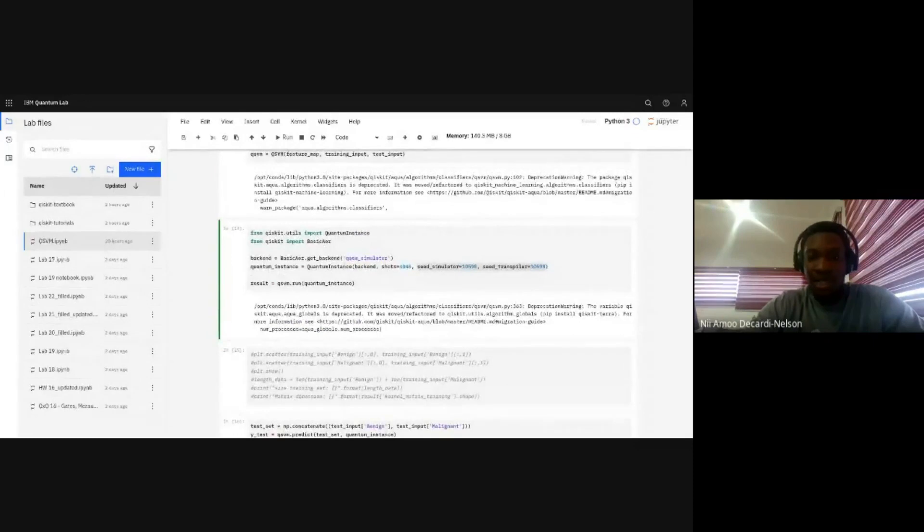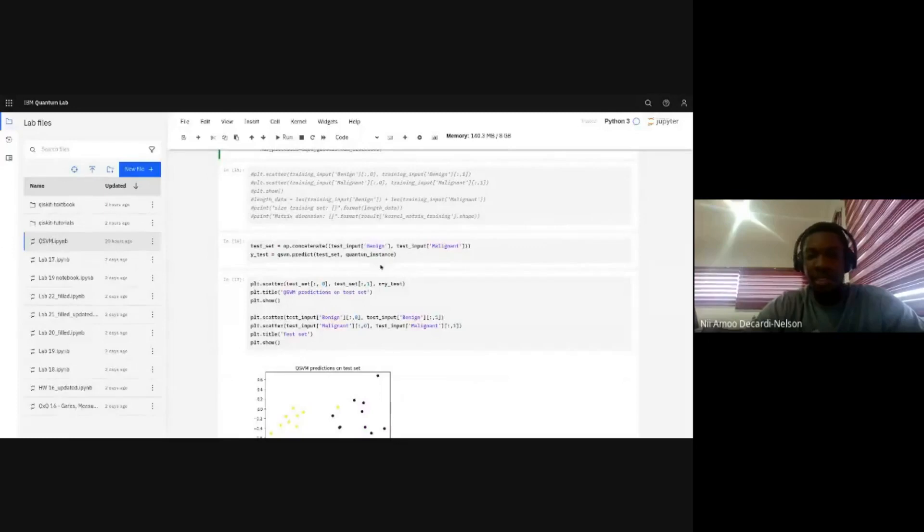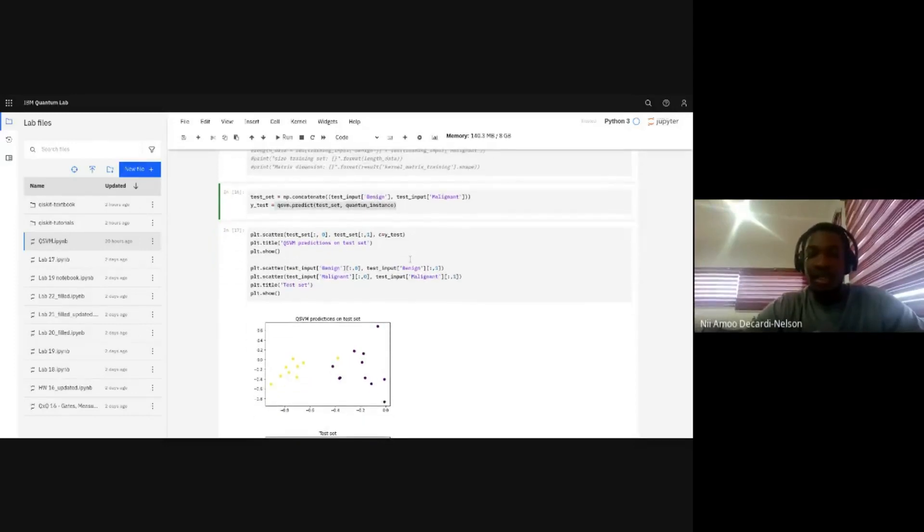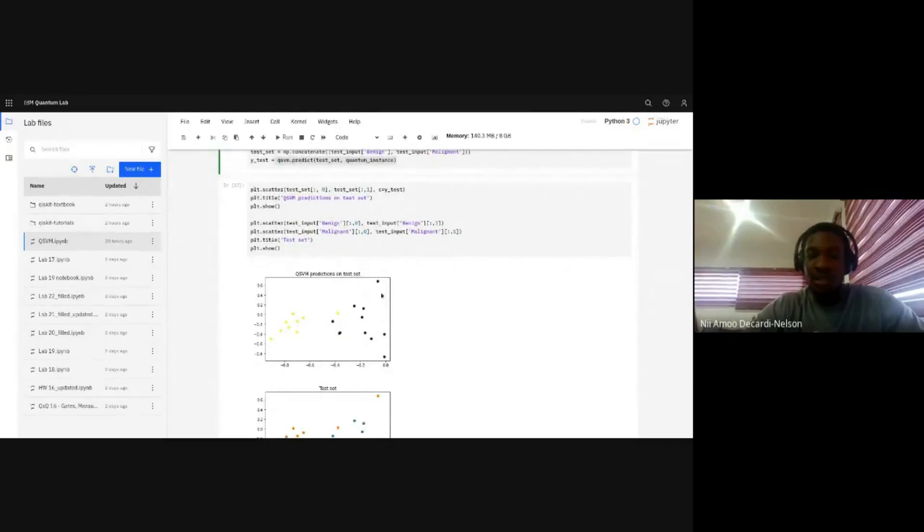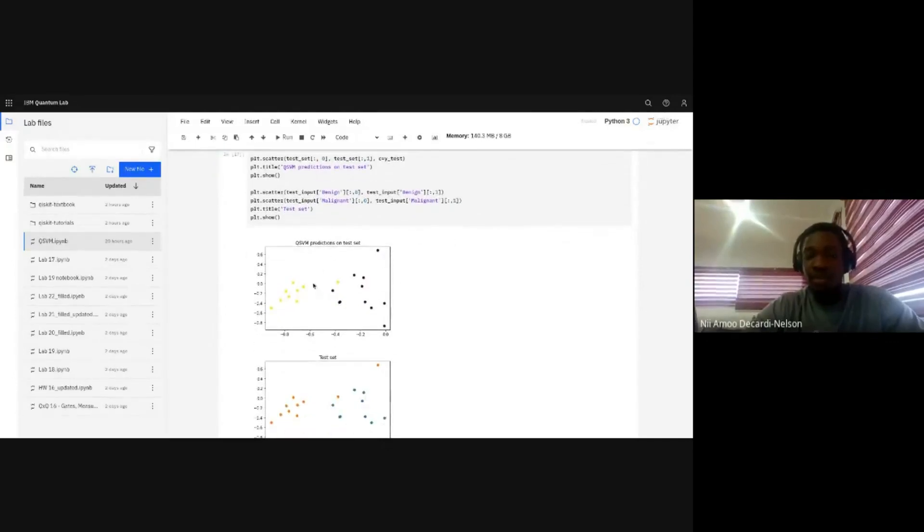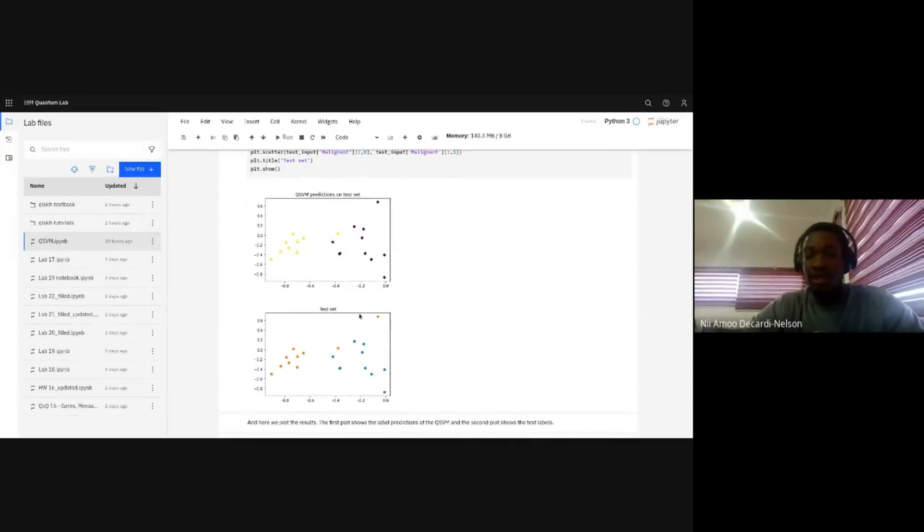So after running that, we save the results over here. And then from there, we can now use our model to predict on the test set by passing the whole thing into the same quantum instance or the environment that we created. And we are able to generate this plot. So from what we have over here, the classifier is saying that points in yellow are on one side and the points in purple are in another. If you compare that to the actual test set, we realize that our classifier misclassified only this points up here.